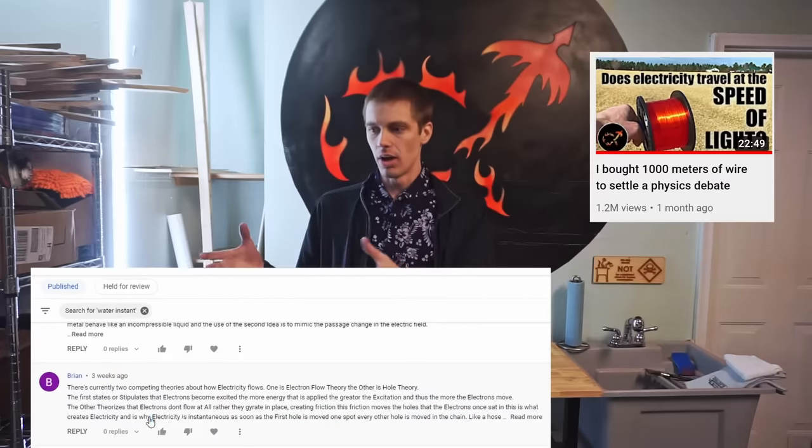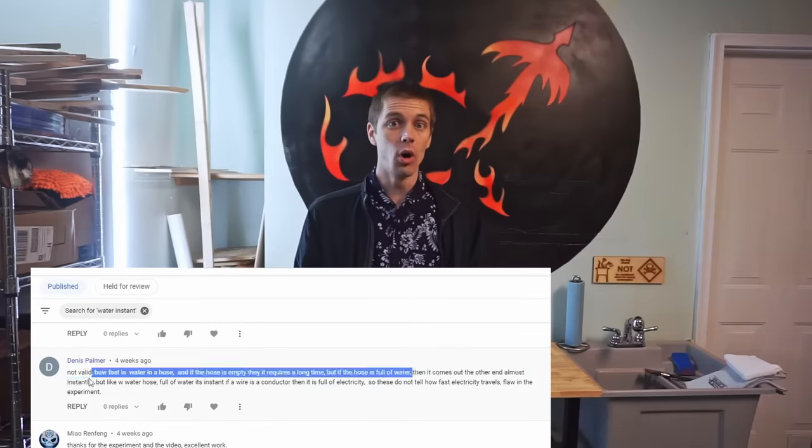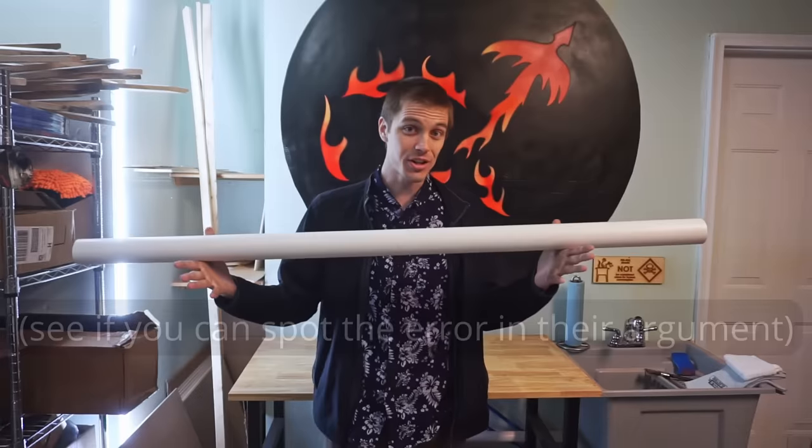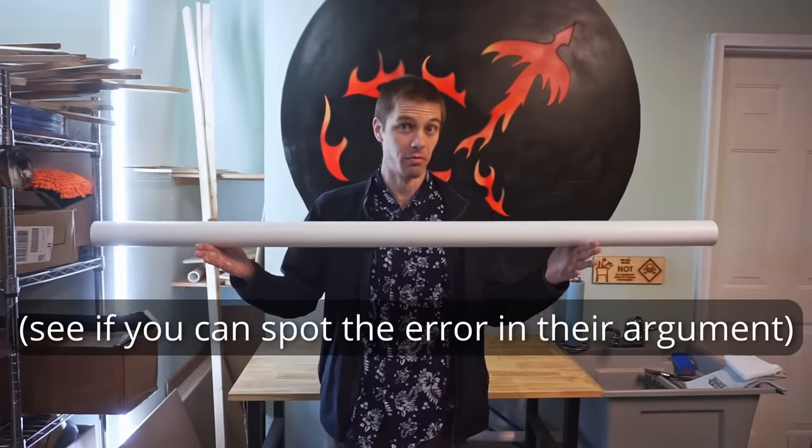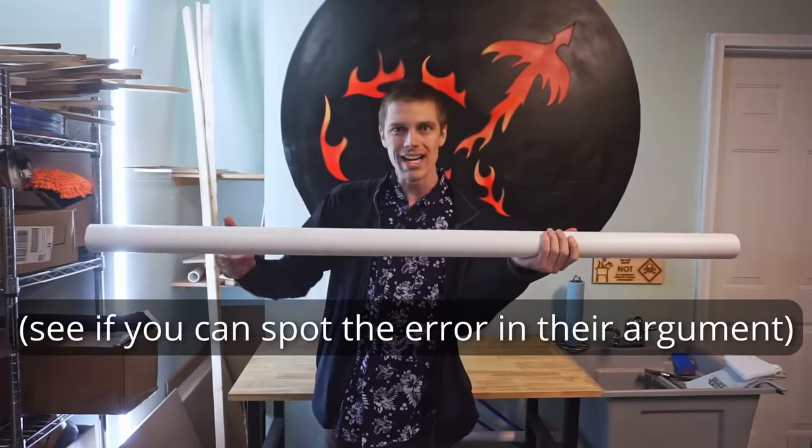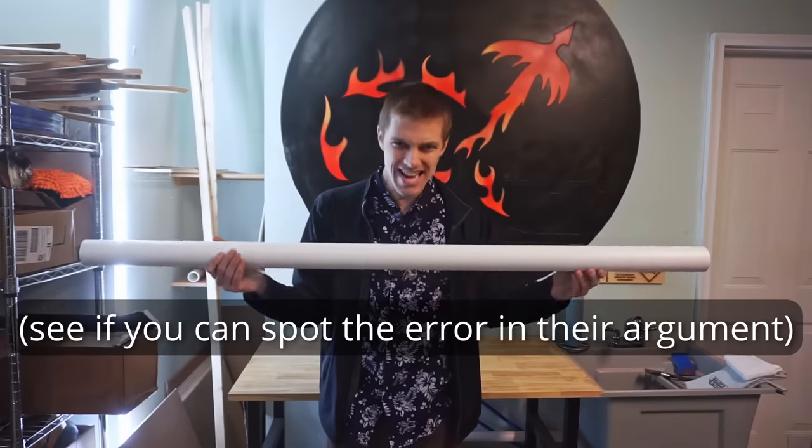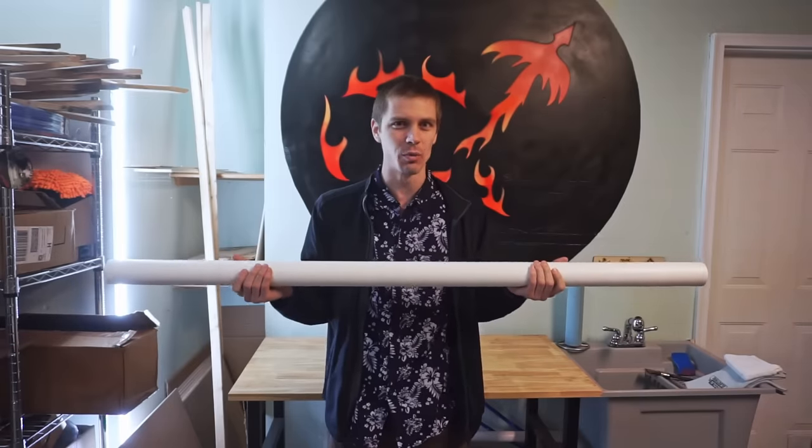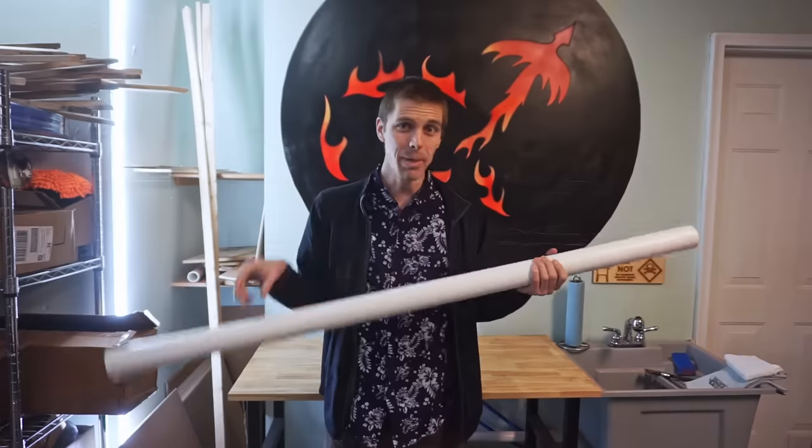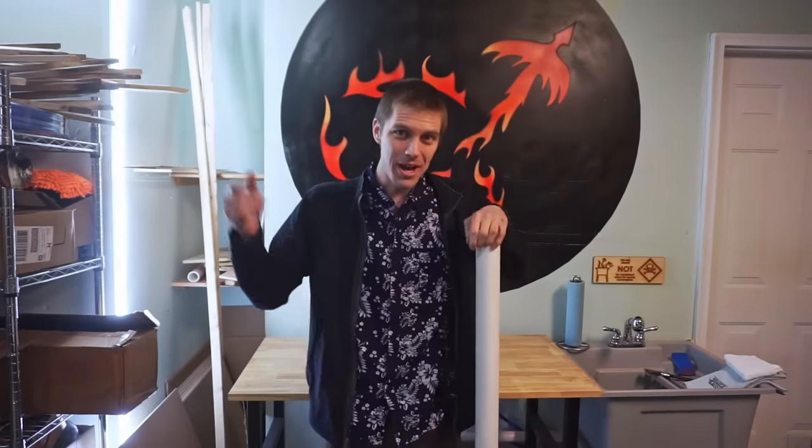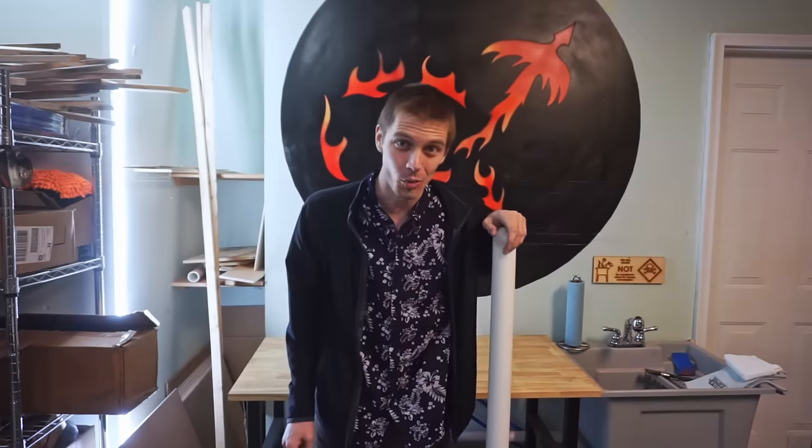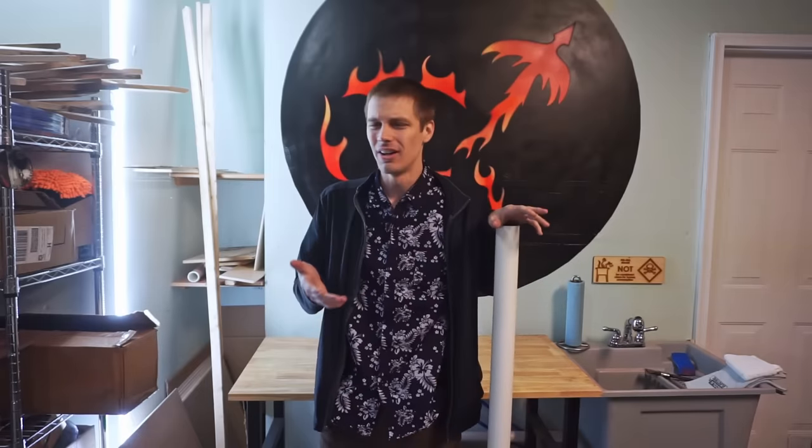One of the most common responses to my last video about the speed of electricity equated a wire full of electrons to a water pipe full of water. Imagine that you have a water pipe like this and it's full of water. If you put more water in one end of the pipe, water has to come out of the other end of the pipe immediately because otherwise you've got a full pipe and you're packing more water into it than will fit. So it feels like something's breaking there. But when I did this with electrons, I pumped electrons into one end of the wire from the battery and it was a good long while before the electrons came out the other end of the wire. I could measure the delay. So what gives?